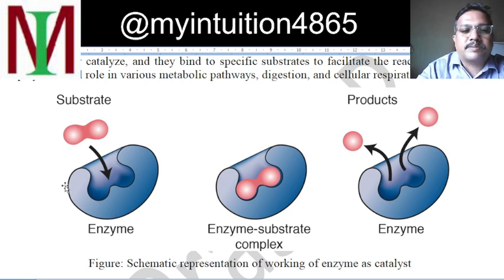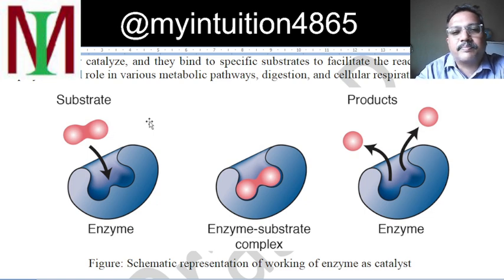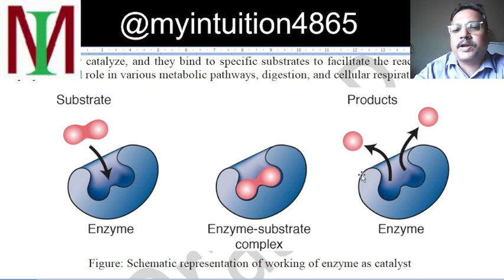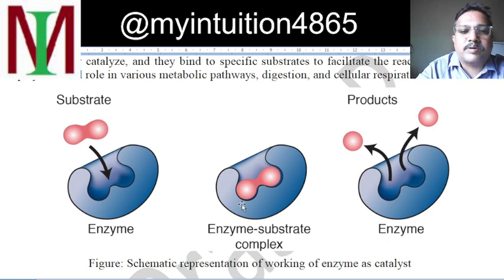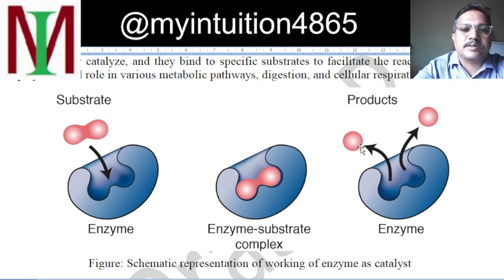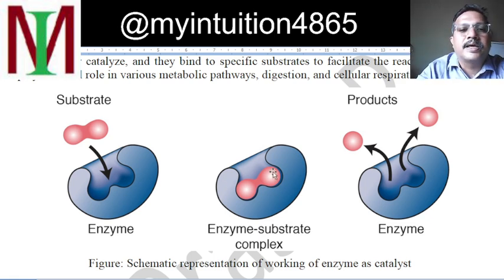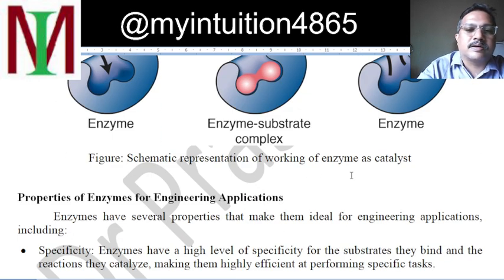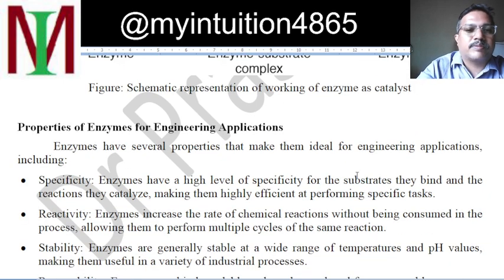For example, an enzyme molecule receives a substrate — the molecule you want to react — and the enzyme speeds up the breaking or combining process, converting it into products. Sometimes a substrate breaks into two products; sometimes two substrates combine to make other products. Enzymes create a favorable atmosphere inside the molecule so that the reaction proceeds. Therefore, enzymes are very important in metabolic pathways, digestion, cellular respiration, and many other biological processes.